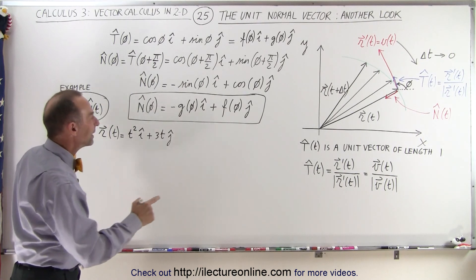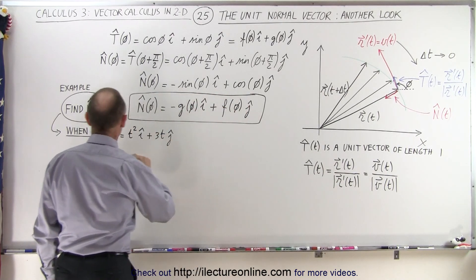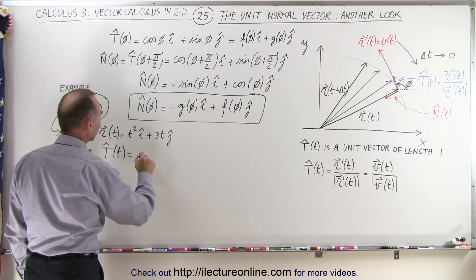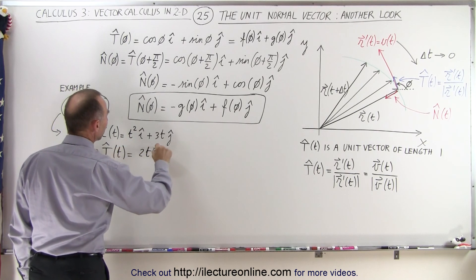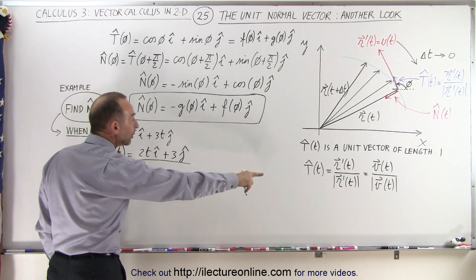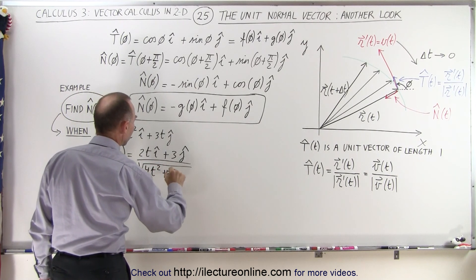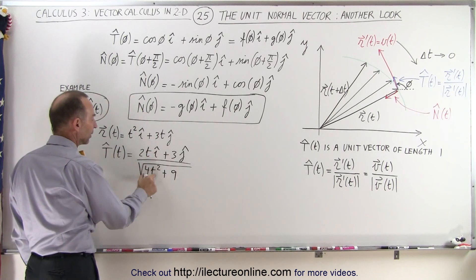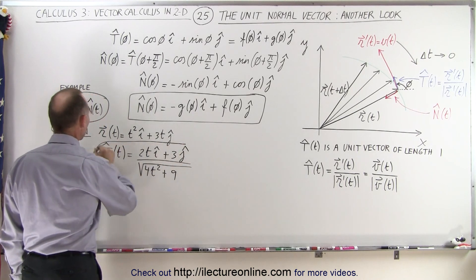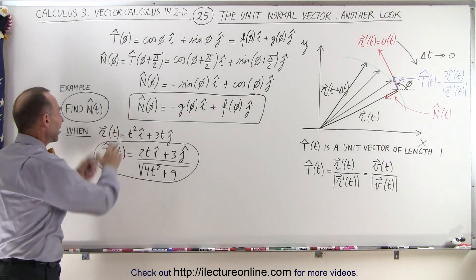To find the unit tangent vector, we take the derivative and divide by the magnitude. The unit tangent vector equals the derivative — which is 2t in the i-direction plus 3 in the j-direction — divided by the magnitude, which is the square root of 4t-squared plus 9. This is what we call the unit tangent vector of that position vector.